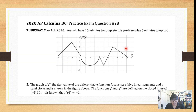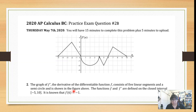The functions f and f prime are defined on the closed interval from negative 5 to 10, and it's known that f(6) equals negative 1. That fact is going to be used in at least one — I think two — different parts of this problem, so make sure you have that handy: f(6) equals negative 1.